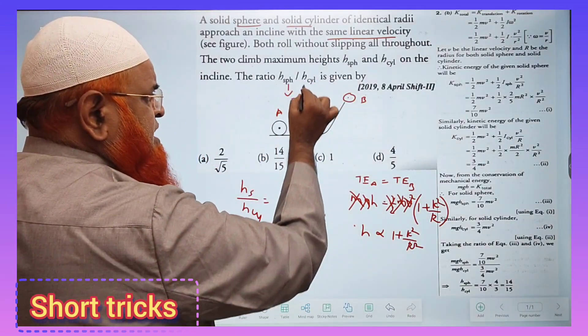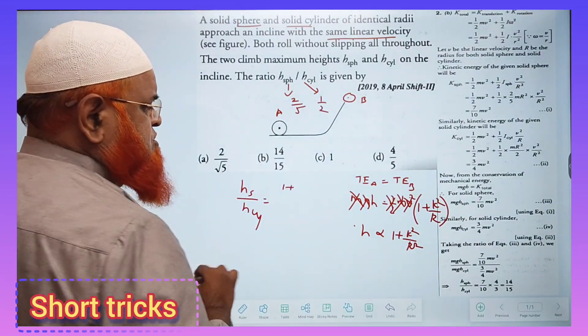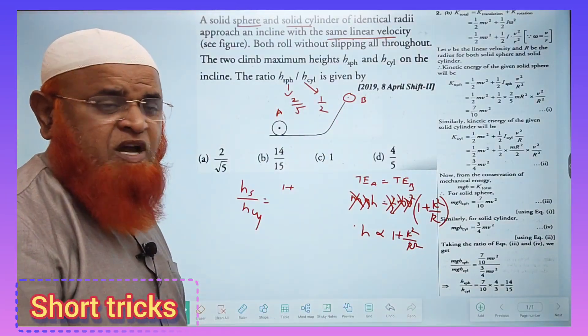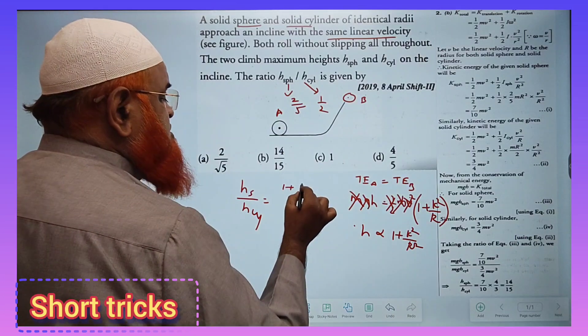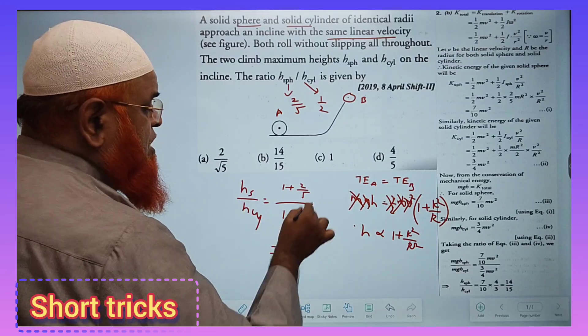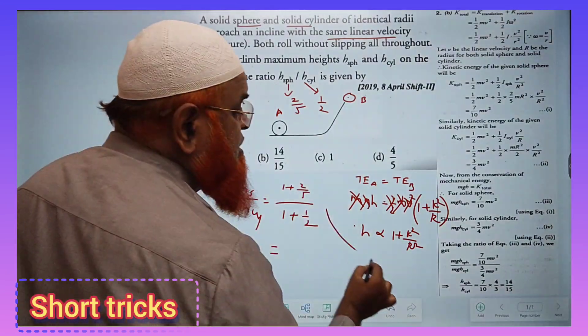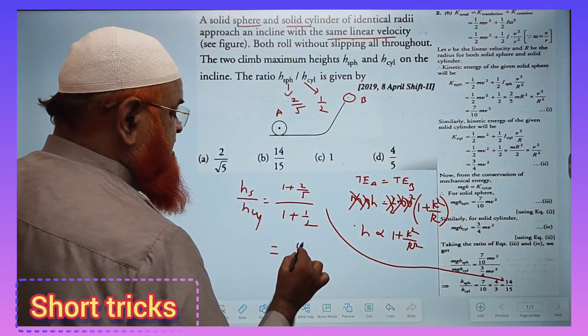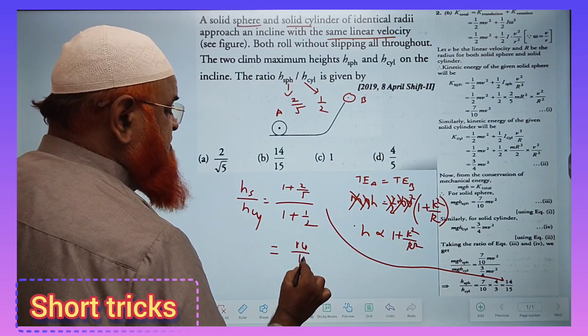For a sphere, K²/R² is 2/5, and for a cylinder, it's 1/2. Therefore, it's (1 + 2/5) divided by (1 + 1/2). If you solve these, you get 14/15.